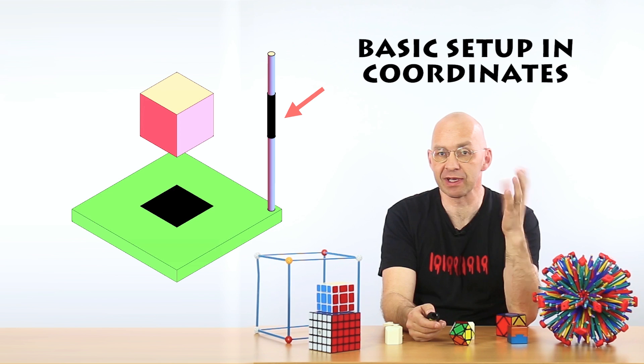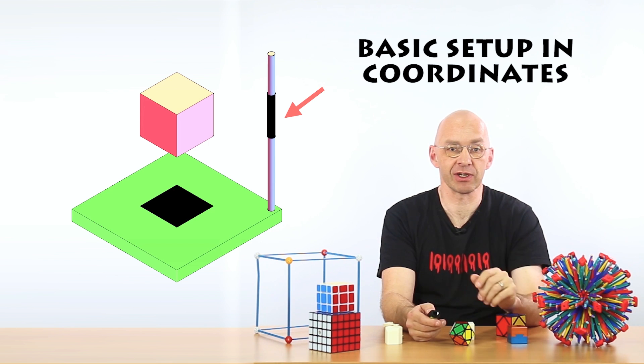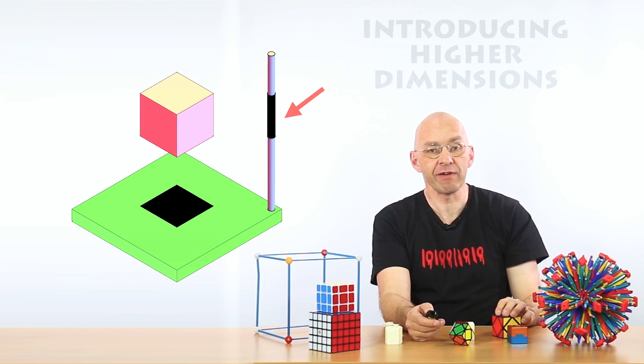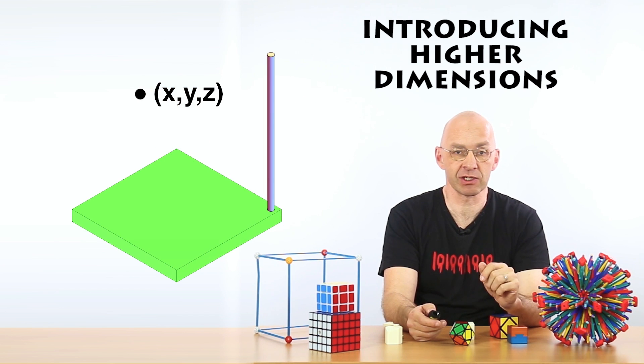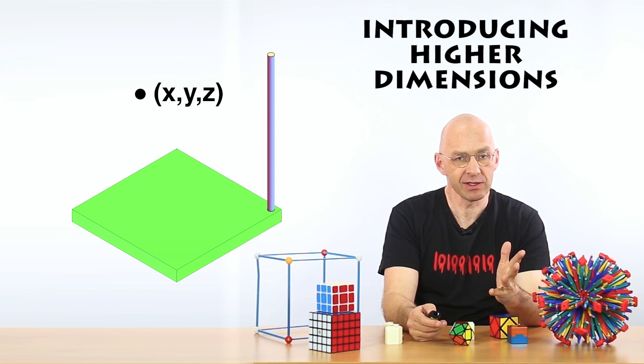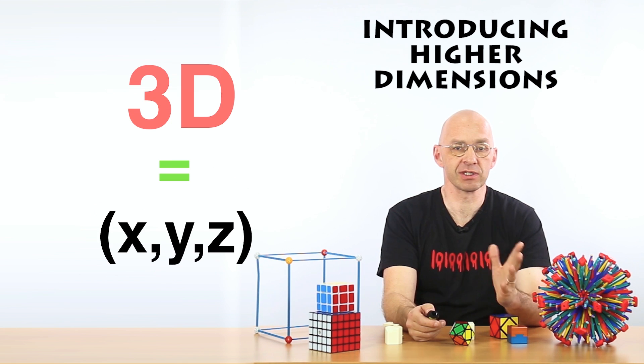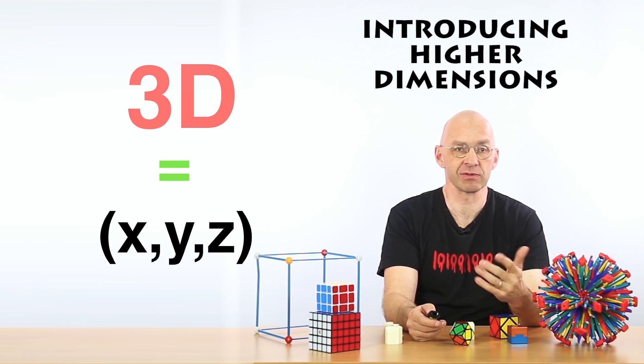Okay, so we're measuring a length of a shadow and an area of a shadow. Alright, so every point in 3D is captured by its x, y, z coordinates and so in a way 3D space is really just a collection of all numbered triples x, y, z. Right?